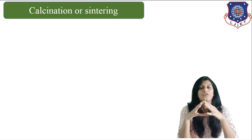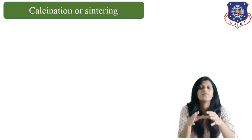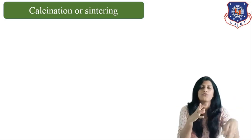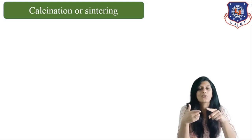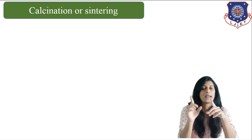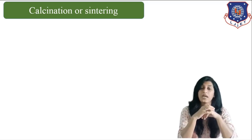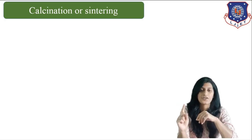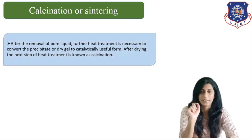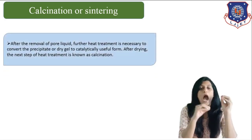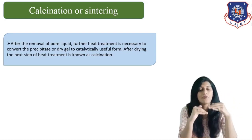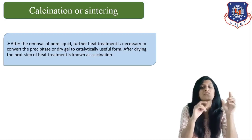Once we have prepared either a precipitate or the gel of catalyst, we give it a proper washing, filtering, and drying. The next step we are going to use is calcination or sintering. After removing liquids from the pores of the catalyst, the catalyst requires some heat treatment.